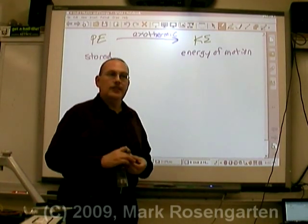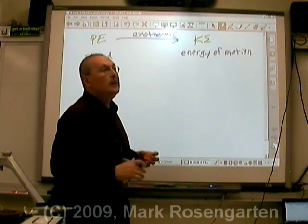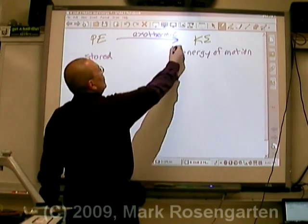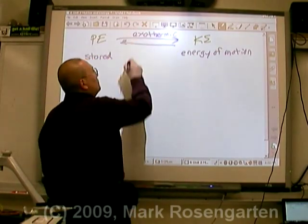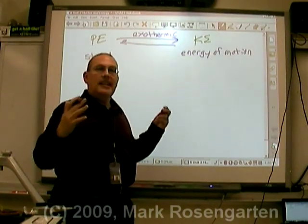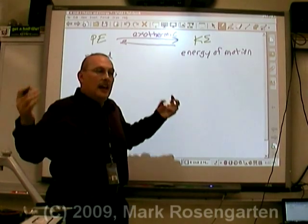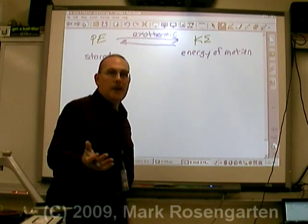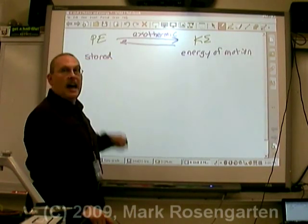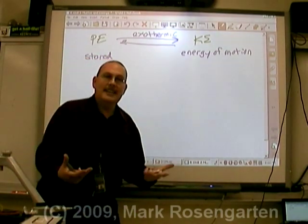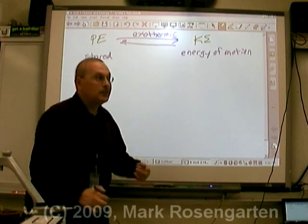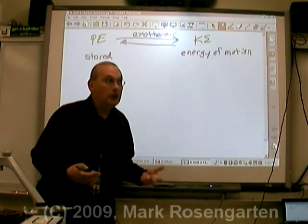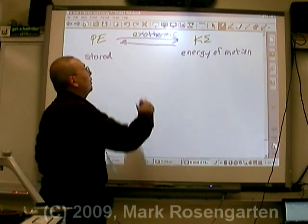Endothermic reactions are a little rarer in nature. In an endothermic reaction, you're taking kinetic energy and converting it back into potential energy — absorbing energy from the surroundings into chemical bonds. This is how explosives are made. Explosives pack a lot of potential energy. Detonating an explosive is exothermic; manufacturing the explosive is endothermic.